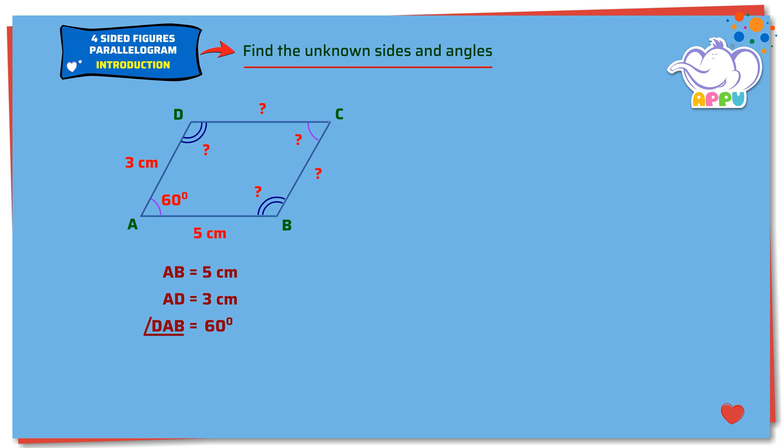Let's find the sides CD and BC. We know that a parallelogram has opposite sides equal. Length of CD equals length of AB, that is equal to 5 cm. Length of BC equals length of AD, that is equal to 3 cm.